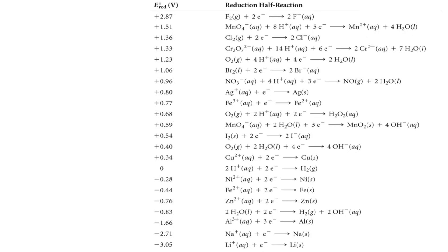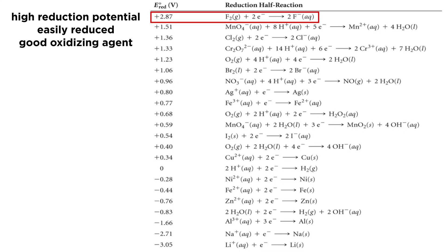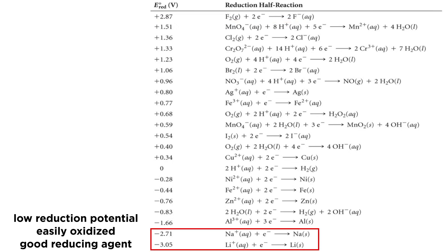So we have a whole list of reduction potentials, and these numbers tell us how favorable it is for a substance to be reduced. We can see here that fluorine is a very good oxidizing agent, as it has a high reduction potential, which makes sense since fluorine has a very high electron affinity. On the other end, elements like lithium and sodium have very negative reduction potentials, making them good reducing agents, since they have a tendency to be oxidized, as it is more favorable for them to lose an electron than to gain one.